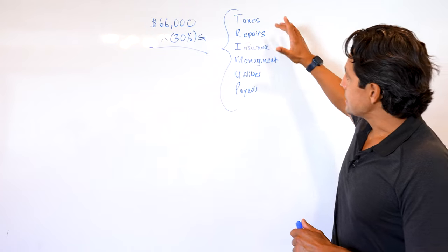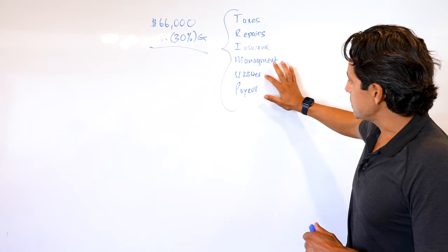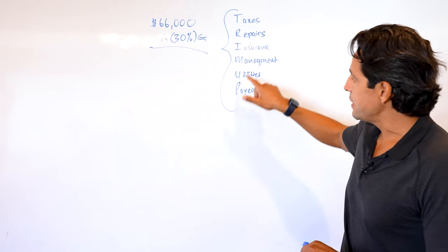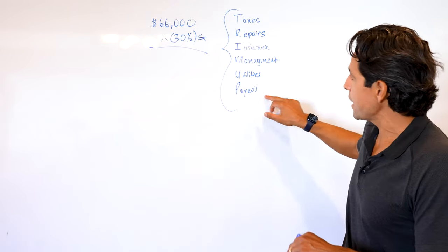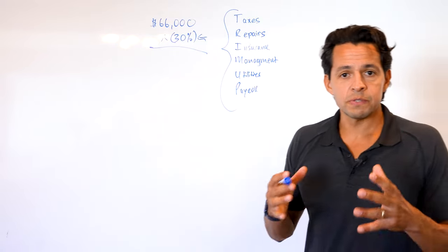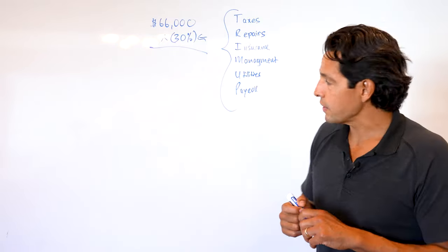So that was the purpose of being able to compare apples to apples in this type of situation. So again: taxes, repairs, insurance, management, utilities, payroll. It is possible that in some cases you don't have management. It's possible that you don't have utilities or payroll, but overall, this is what you're going to have. This is what's called the operational expense. It's important that you know that.